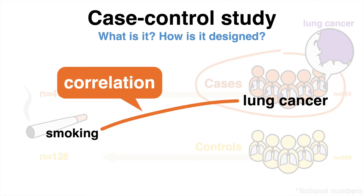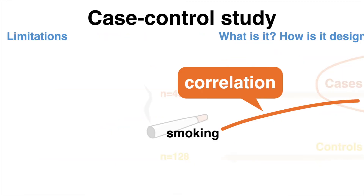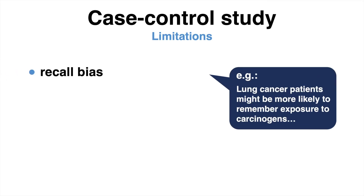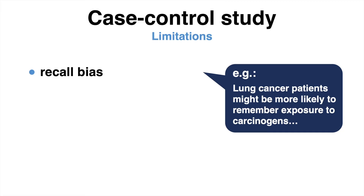While case control studies are useful and easy to conduct, they have several limitations. One of these is recall bias, which refers to the fact that people affected by a certain condition might be more or less likely to remember events in their past. For example, it is possible that lung cancer patients are more likely to remember previous exposure to carcinogens than unaffected individuals.